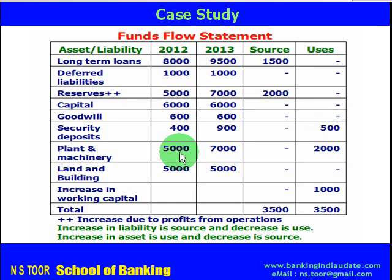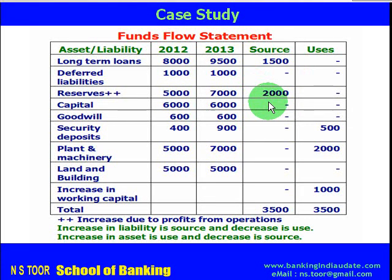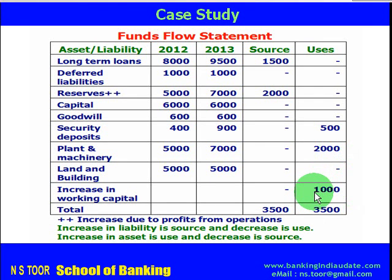Plant and machinery increased from 5,000 to 7,000 — an increase of 2,000. Increase in asset is a use, so we place it under uses. Increase in working capital of 1,000 is also a use; decrease in working capital would be a source. So increase in working capital of 1,000 is taken as part of uses. Total uses are 3,500 and total sources are also 3,500. Long-term sources increased by 3,500, long-term uses by 2,500, and working capital increased by 1,000. This means the firm has funded its long-term uses from its long-term sources, which is healthy financial management.